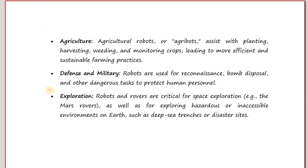Robotic systems also have applications in agriculture. Agricultural robots, also known as agribots, assist with planting, harvesting, weeding and monitoring crops, leading to more efficient and sustainable farming practices. In defense and military, they are used for reconnaissance, bomb disposal and other dangerous tasks to protect human personnel.